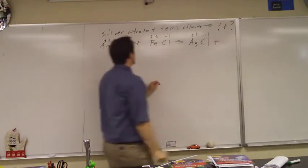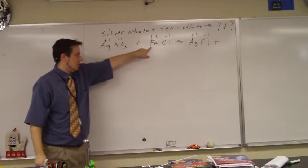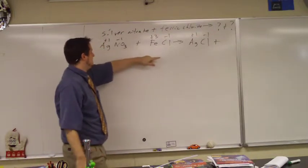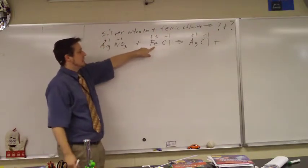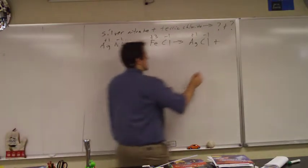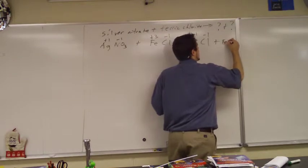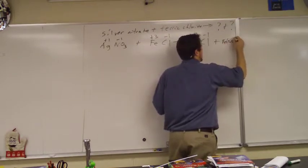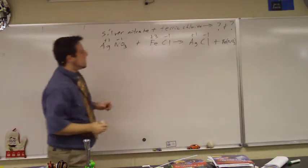Plus, what's the other thing going to be? What's the iron going to go with? If it stayed with the chlorine, we'd have a problem because all of a sudden the nitrate went away. So the iron has to go with the one that's negative, the other one, which is the nitrate. So I'm going to write Fe NO3. I got that much.